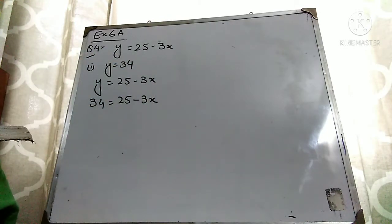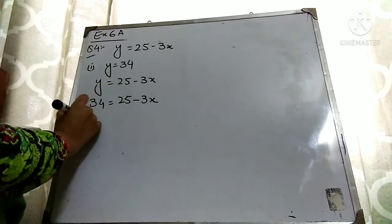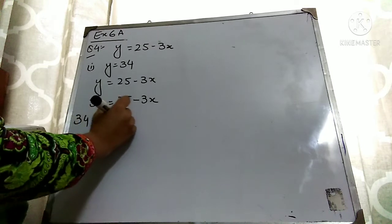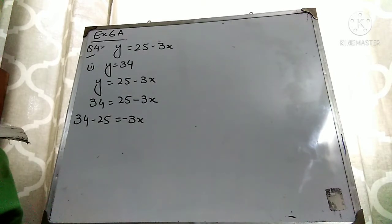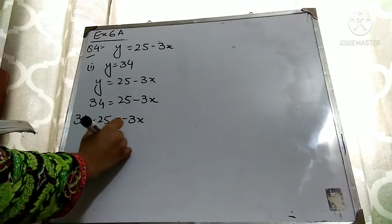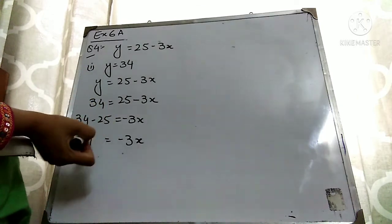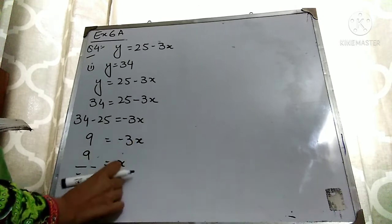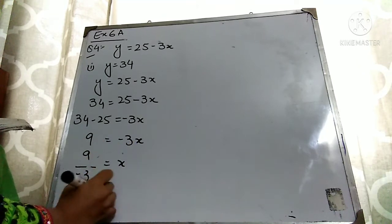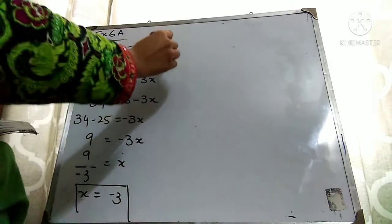To find x, move all extra terms to the other side. This 25 is adding here, so it will subtract on the other side. What remains is minus 3x. Subtracting 25 from 34 gives 9, so 9 equals minus 3x. Since minus 3 is multiplying x, it moves to the other side and divides. 9 divided by minus 3 gives minus 3. So the value of x is minus 3 when y equals 34.